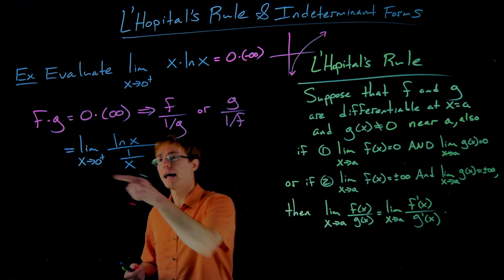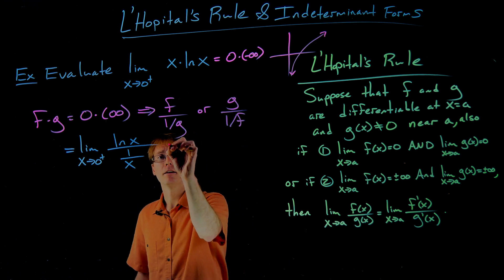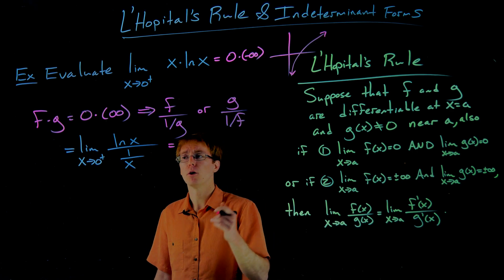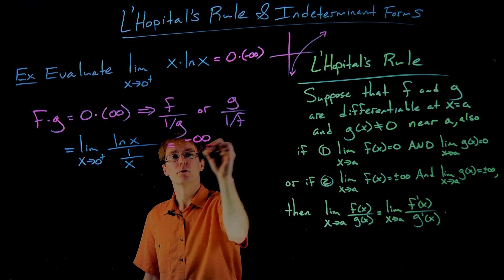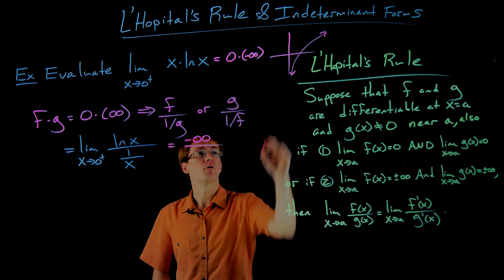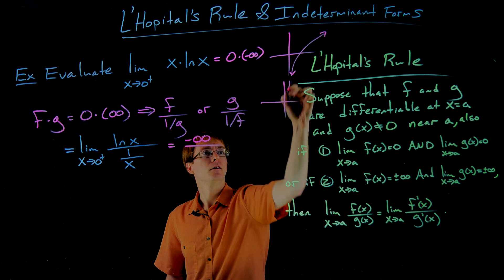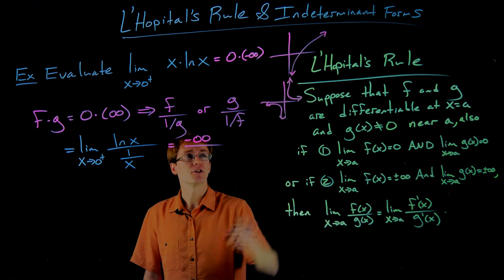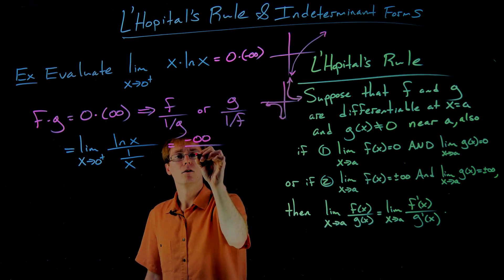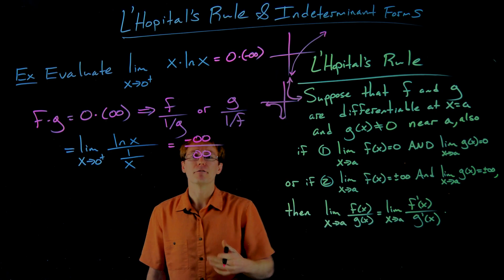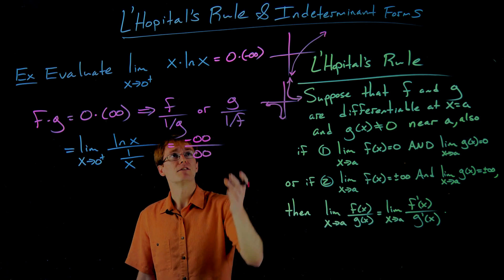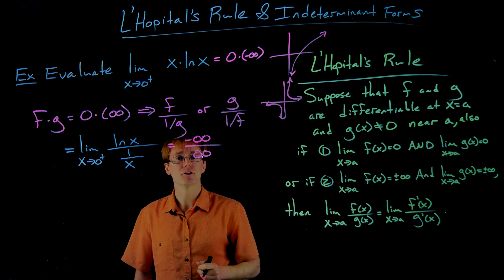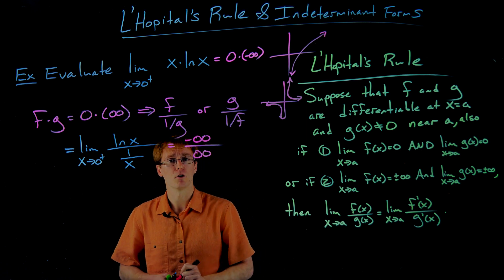Taking the limit as x approaches 0 from the right of our rewritten form: the natural log component approaches negative infinity, as we discussed. The function 1/x also has a vertical asymptote at 0, and as we approach from the right, 1/x diverges toward positive infinity. So we've converted our indeterminate product into an indeterminate quotient — negative infinity over positive infinity — and we can apply L'Hôpital's rule.